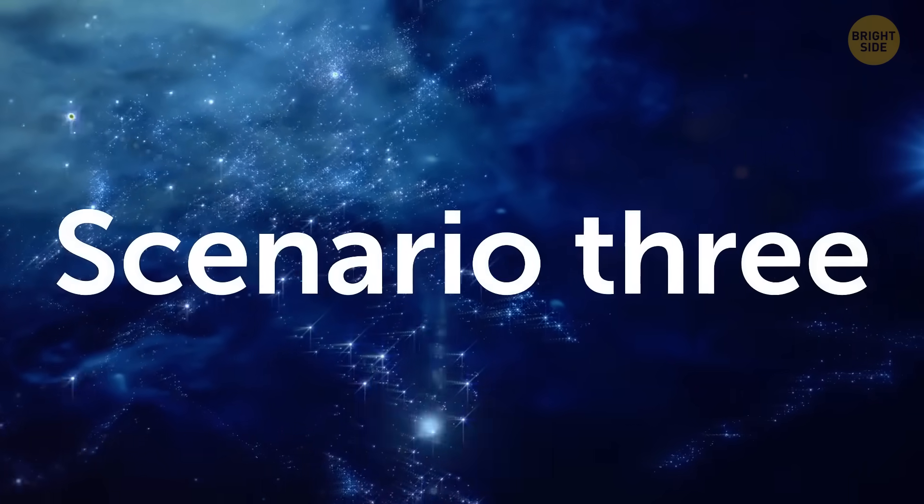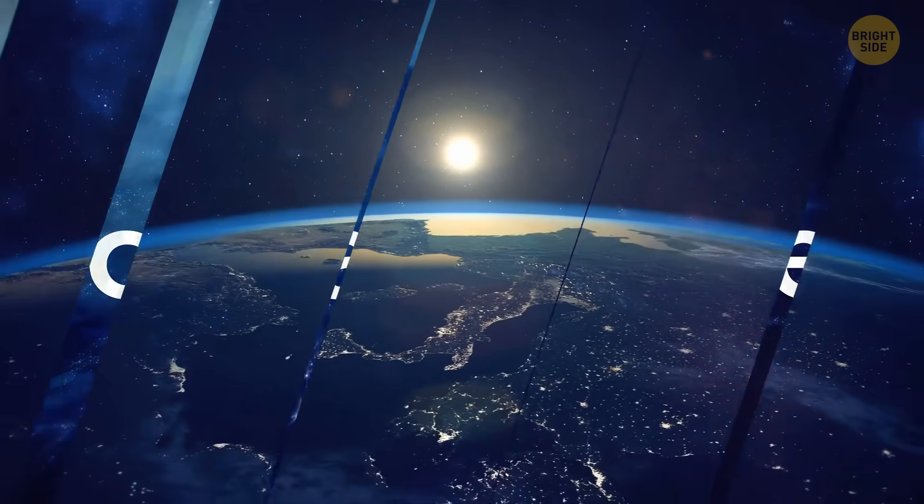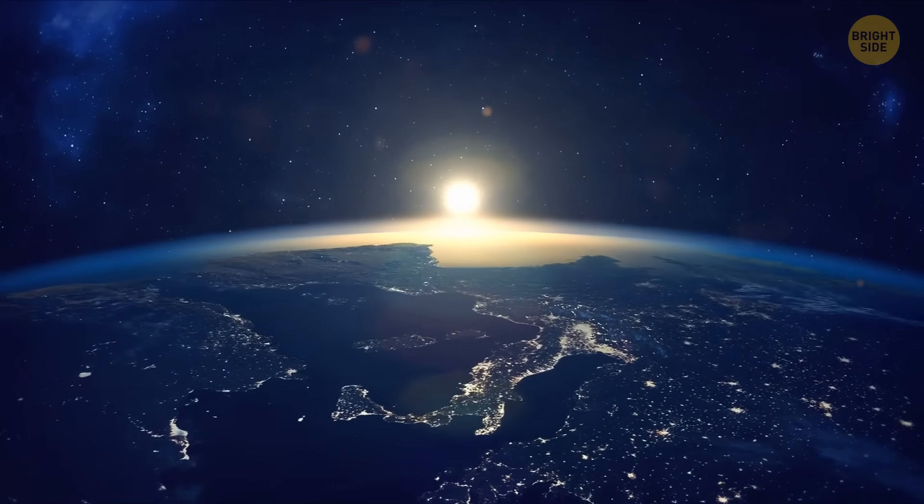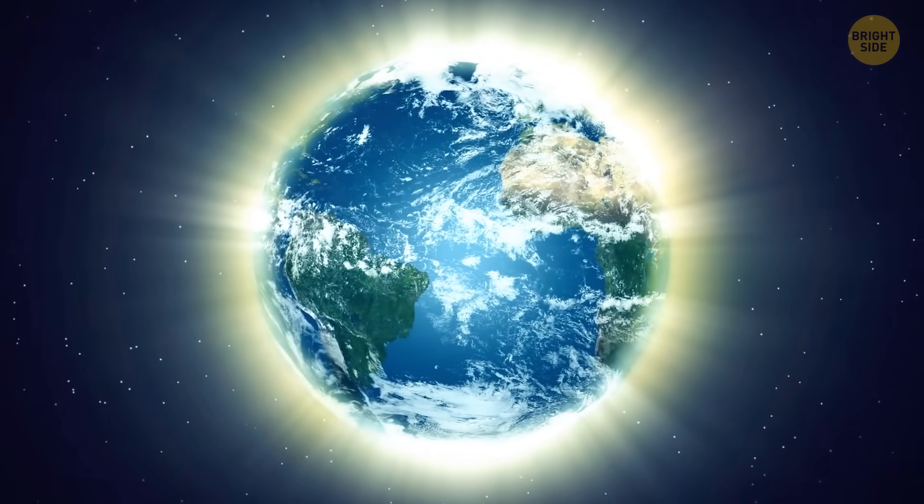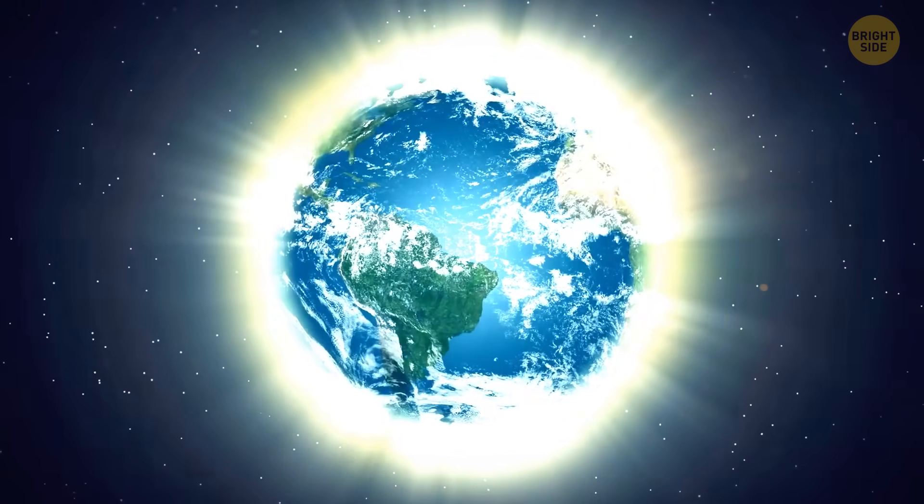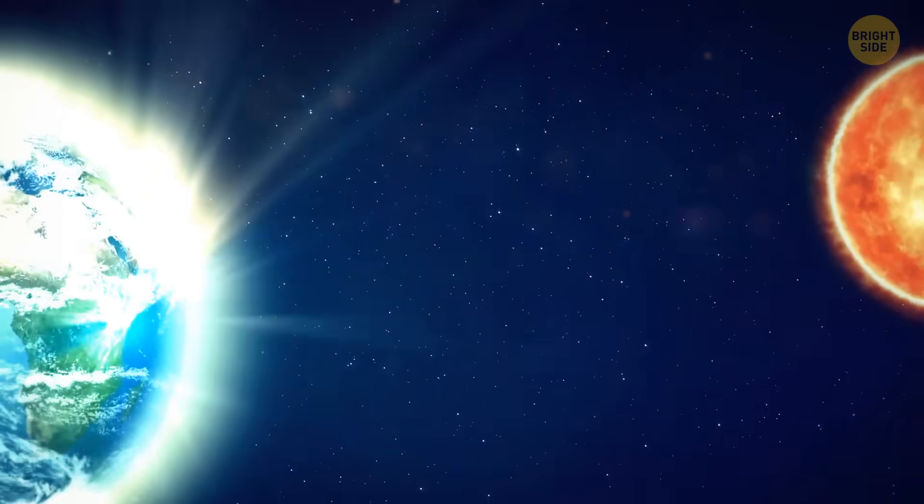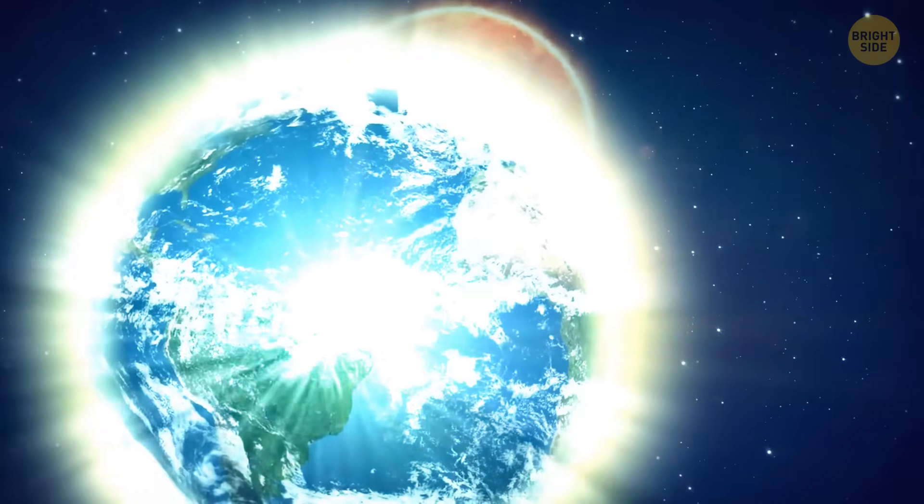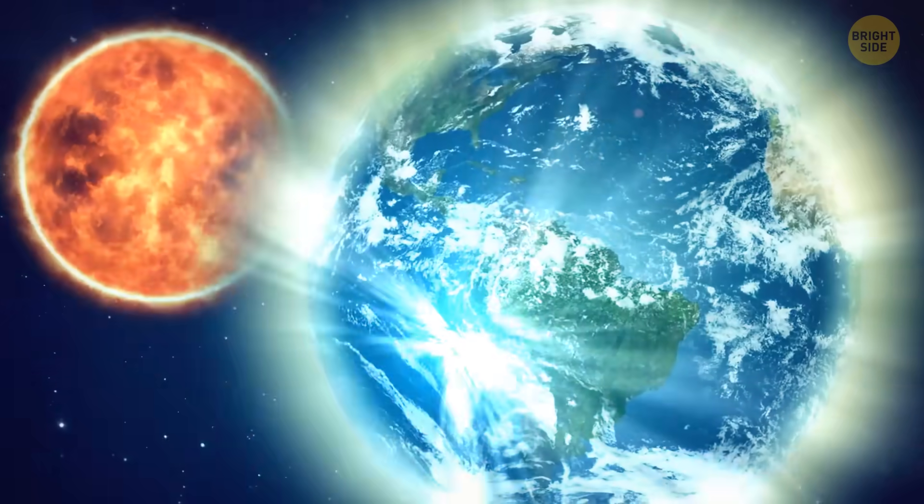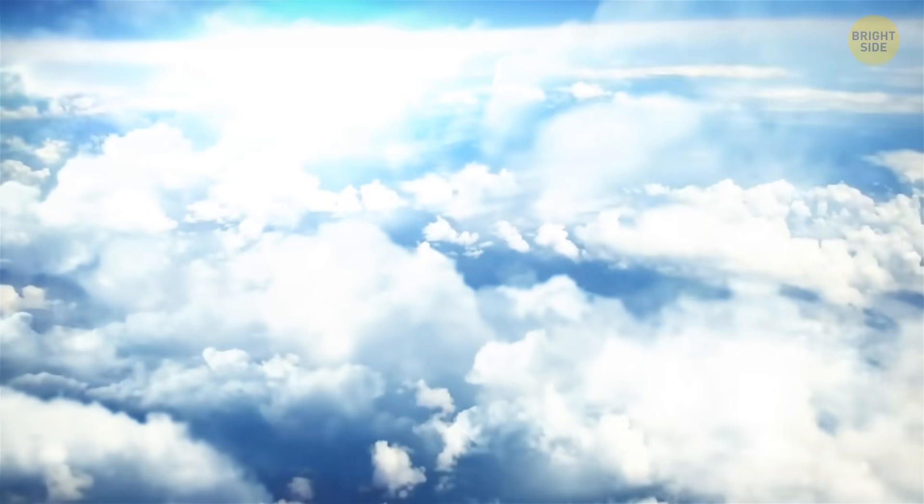Scenario 3: Same thing, but the Earth retains its density. Now this one is interesting. We're no longer a planet. We're a star now. In fact, we became even more massive than the sun. Our planet now has a 3.9 solar mass, because we need to balance our low density somehow.